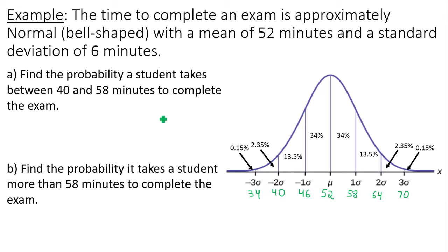To find the probability a student takes between 40 and 58 minutes to complete the exam, I find 40, I find 58. And I would have three regions here. Region 1, region 2, region 3. So add up the three percentages. 13.5 plus 34 plus 34. And that is going to give you a grand total of 81.5%. Or in decimal form, 0.815. That is the probability that a student takes between 40 and 58 minutes to complete the exam.